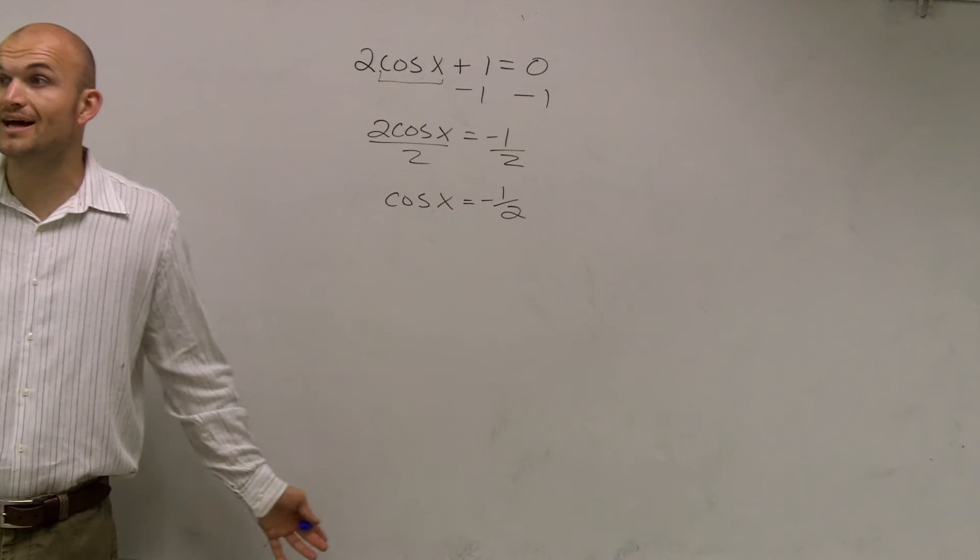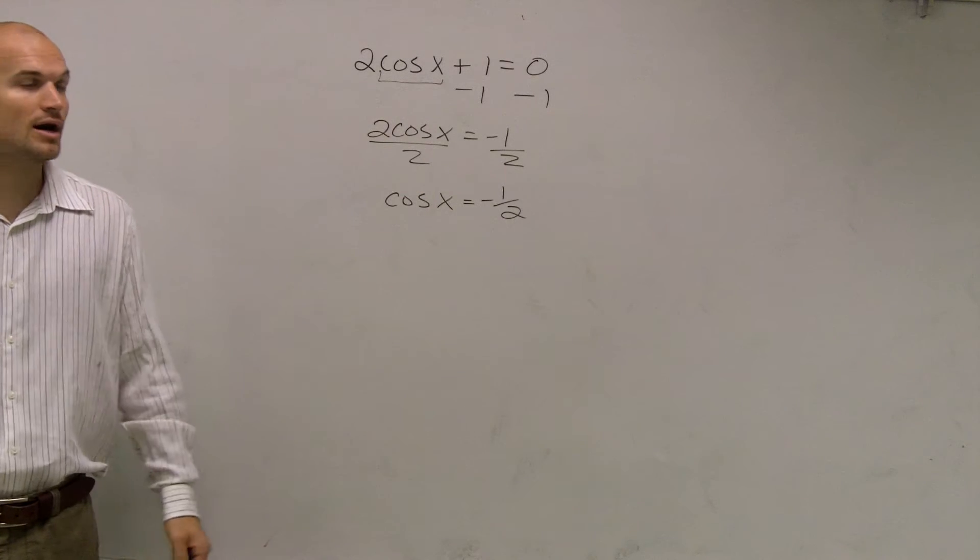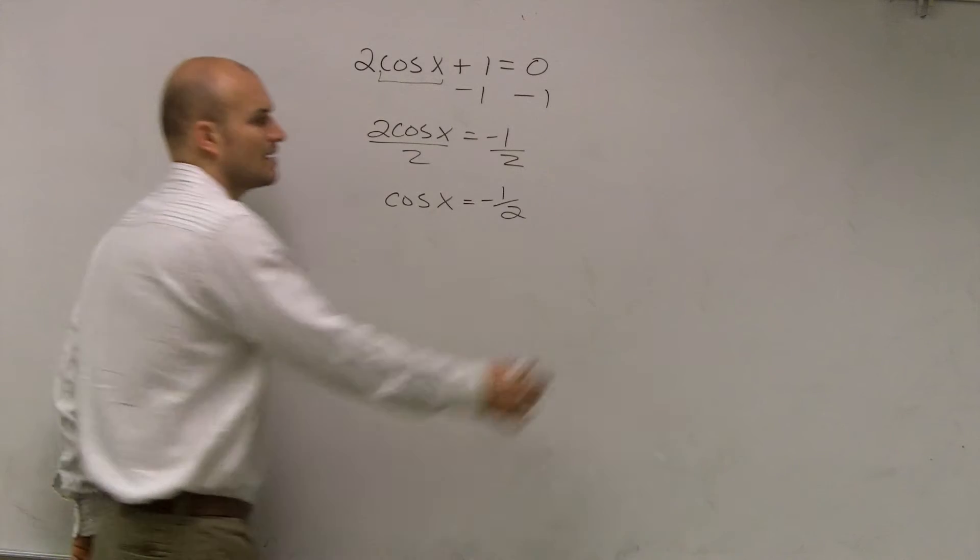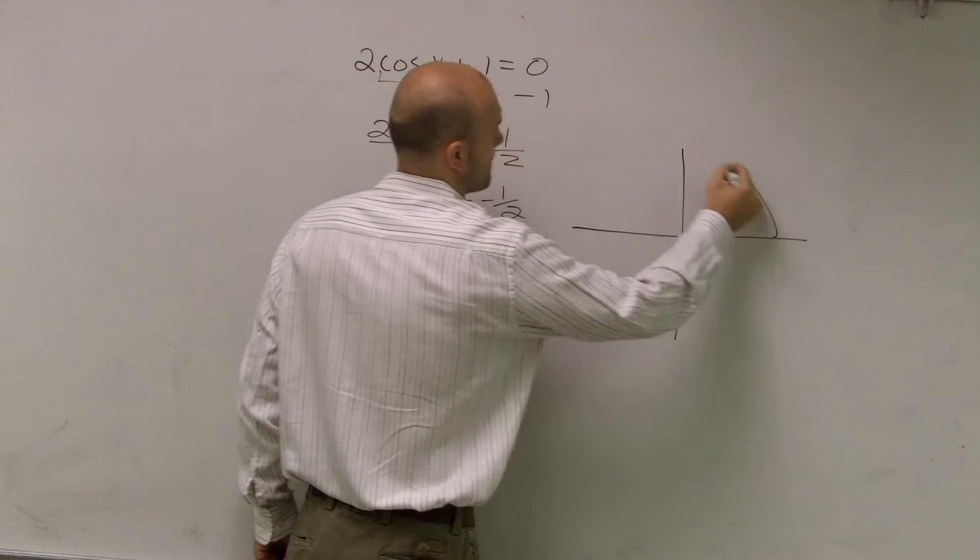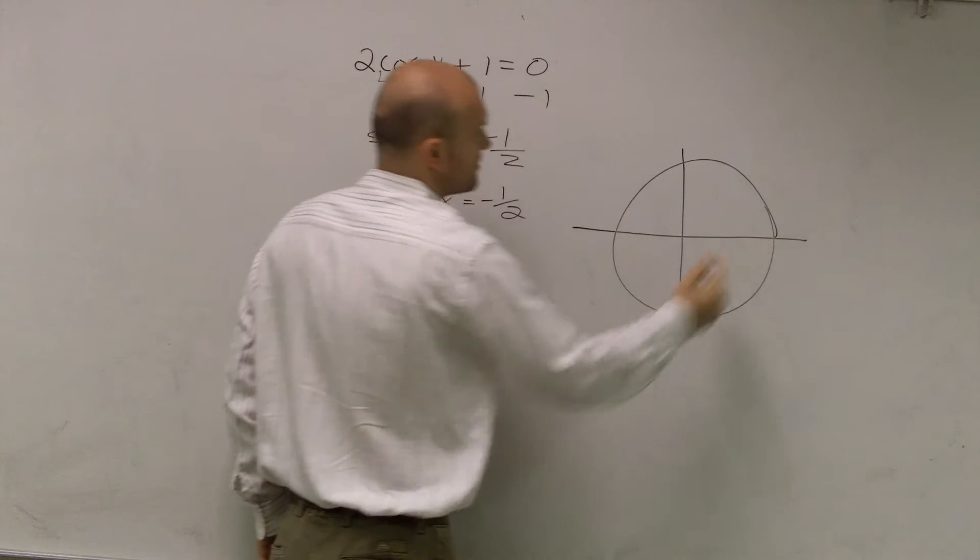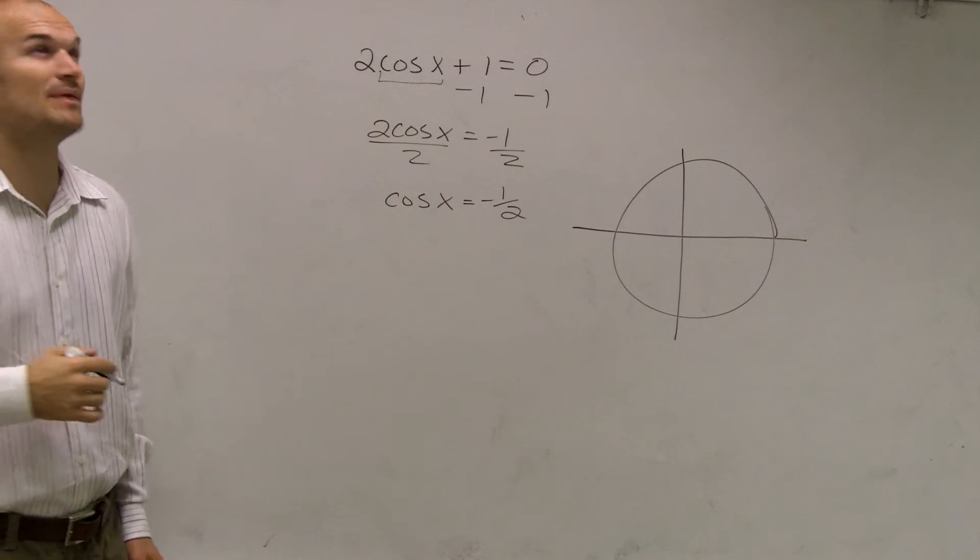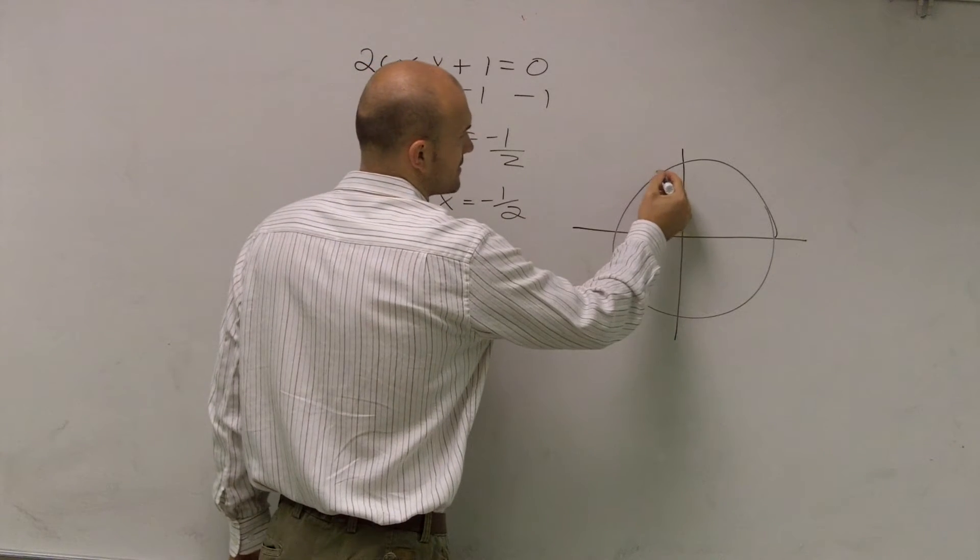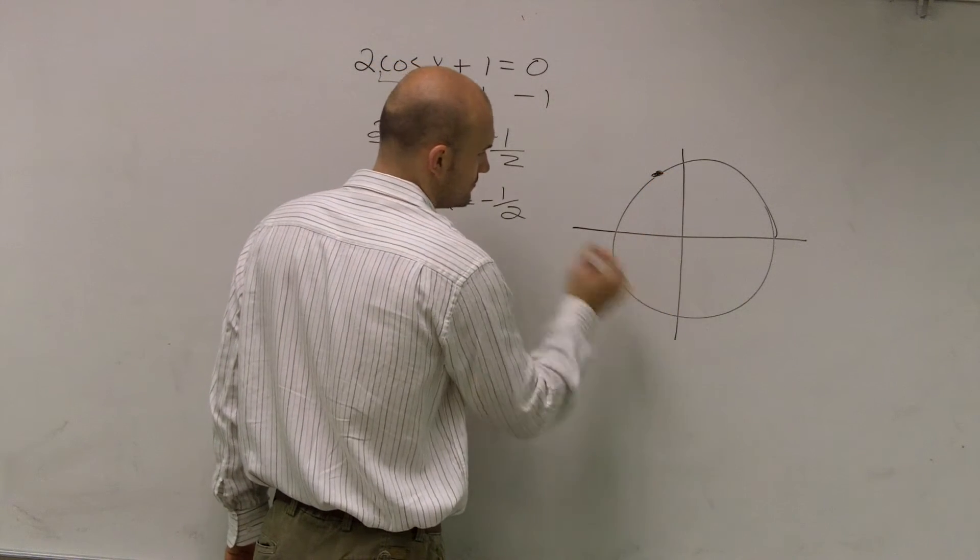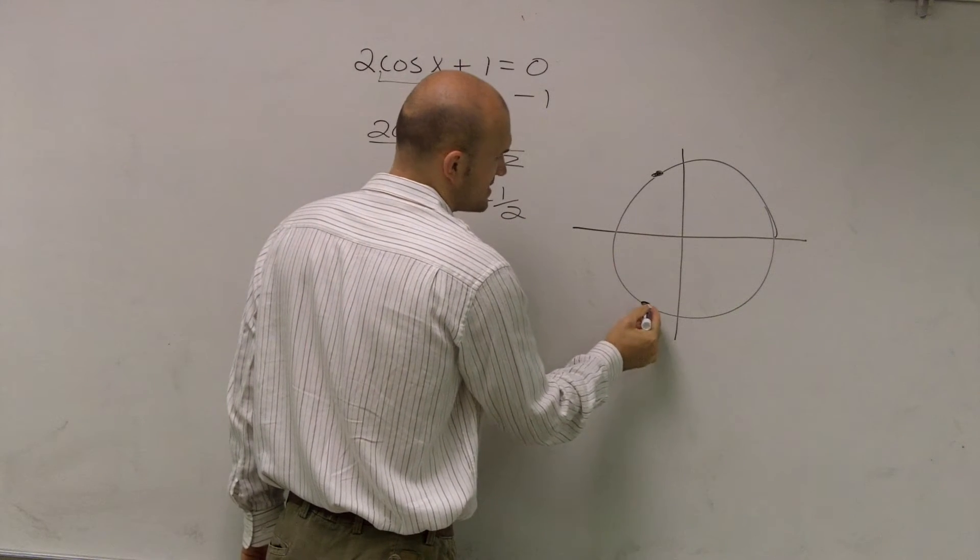Then I need to say, well, what values work for when cosine of x equals negative 1 half? So I'll just go ahead and think about my unit circle and think about, well, cosine of x equals negative 1 half. I know at this angle and this angle.